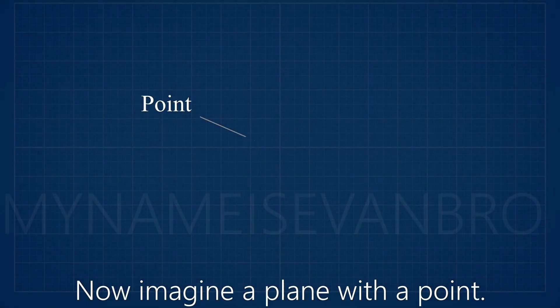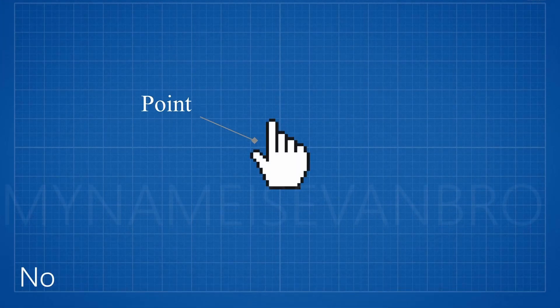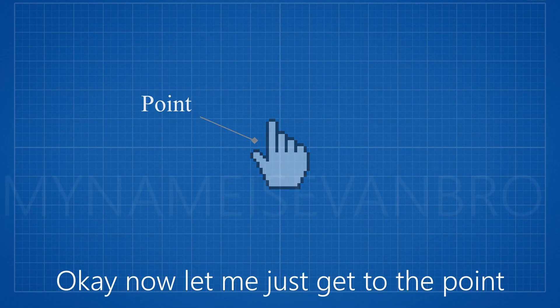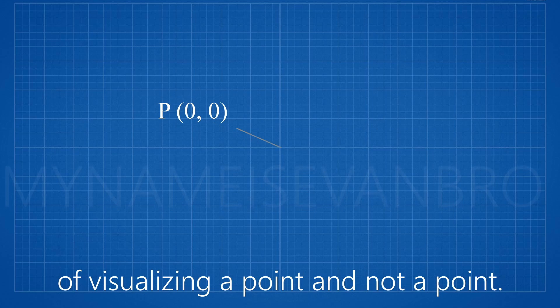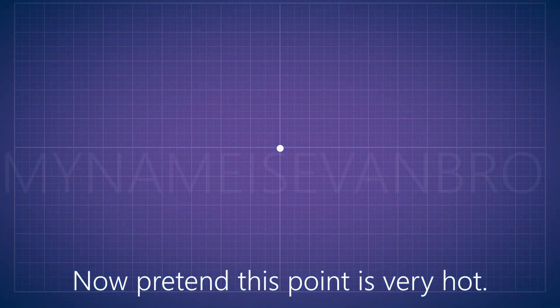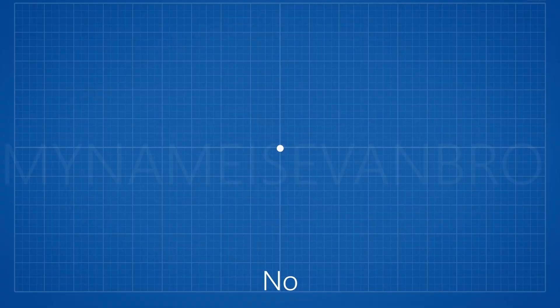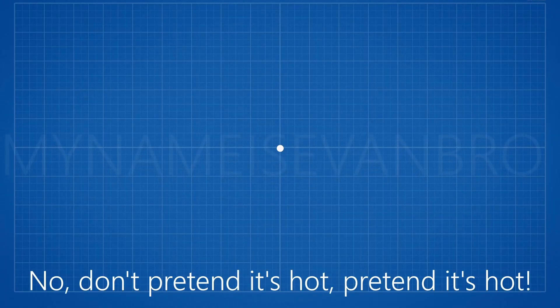Now imagine a plane with a point. No, not a point, a point. Okay, now let me just get to the point of visualizing a point and not a point. Now pretend this point is very hot. No, don't pretend it's hot, pretend it's hot.